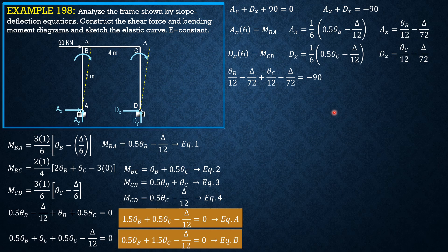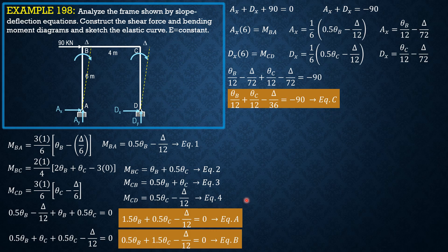Simplifying and establishing the third equation C: theta_B over 12 plus theta_C over 12 minus delta over 36 equals negative 90. Solving equations A, B, and C simultaneously, we obtain theta_B equals 180 over EI, theta_C equals 180 over EI, and delta equals 4020 over EI.